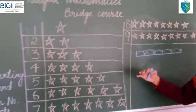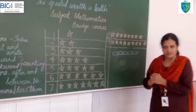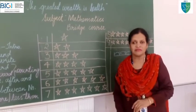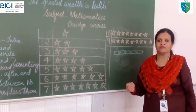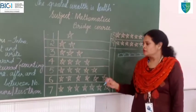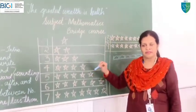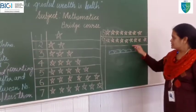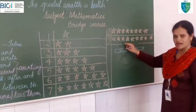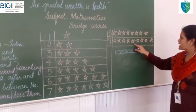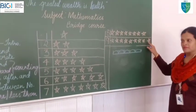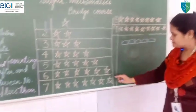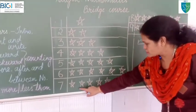Now let's see what happens when we count numbers in the backward direction. What is backward counting? You have already learned in your earlier class what backward counting is. Backward counting is exactly the opposite of forward counting — you count numbers in the reverse direction, from the bigger number to the smaller number. Look at this — number 9 has 9 stars: 1, 2, 3, 4, 5, 6, 7, 8, 9. The previous number is 8, and the one before that is 7.